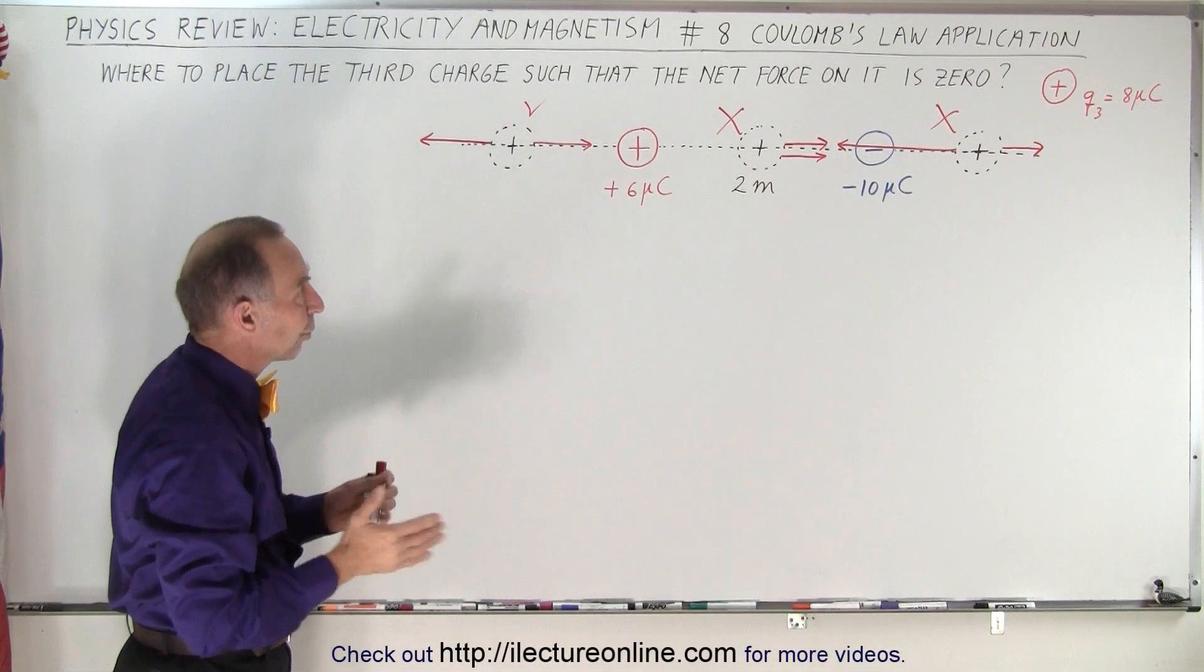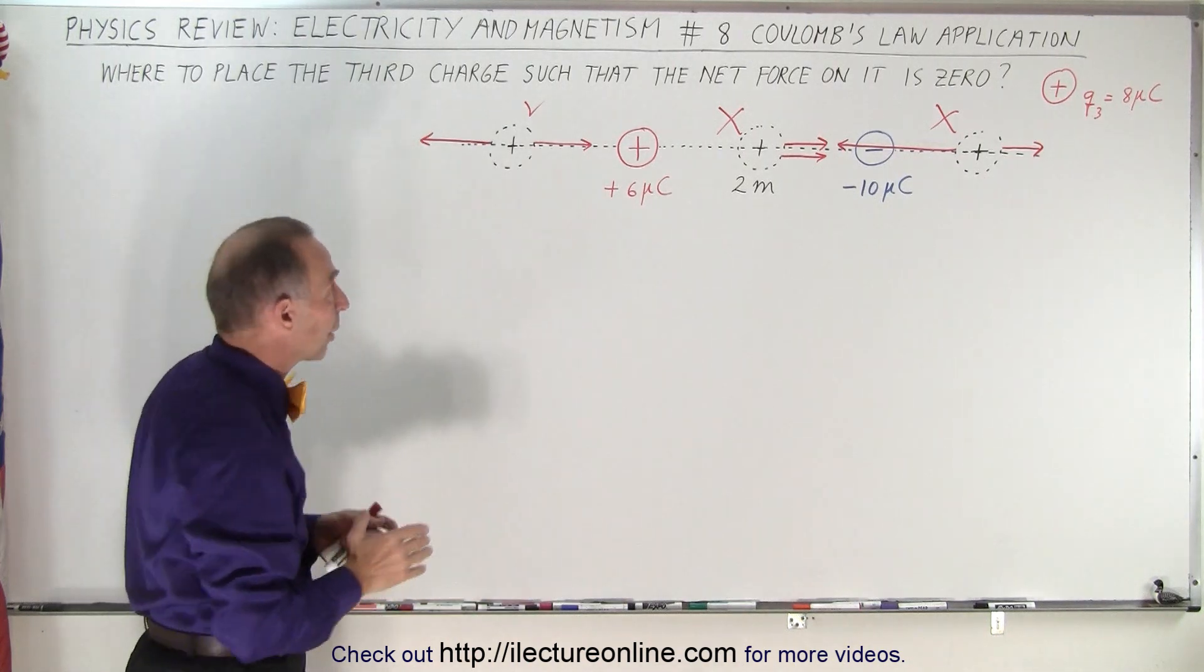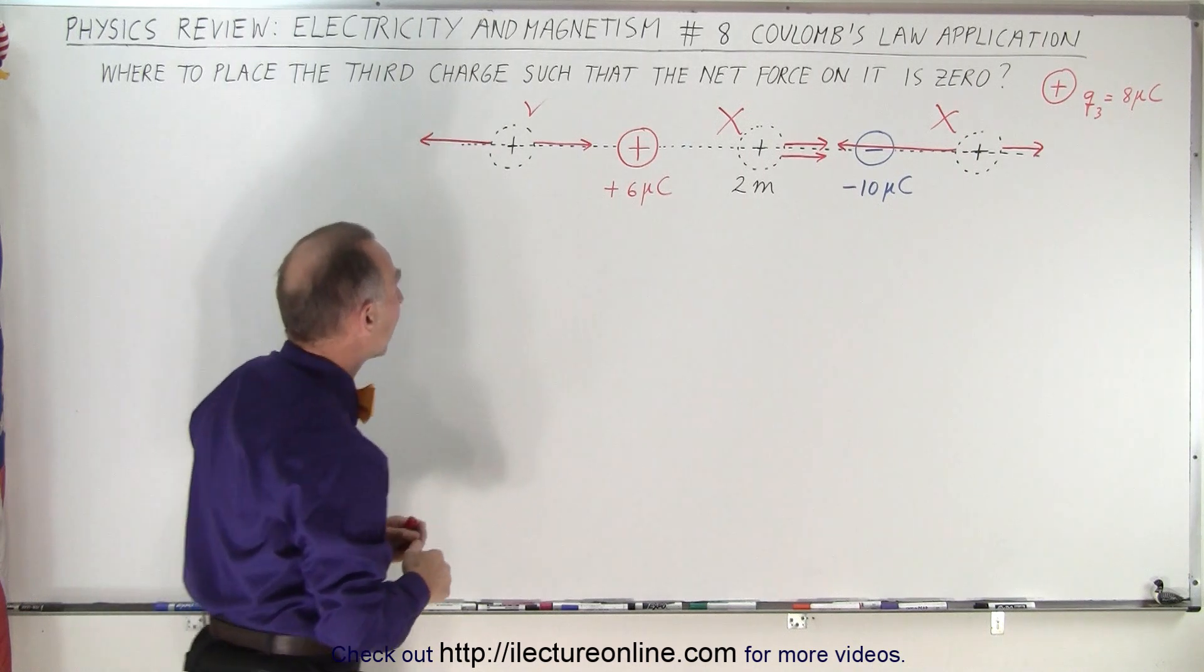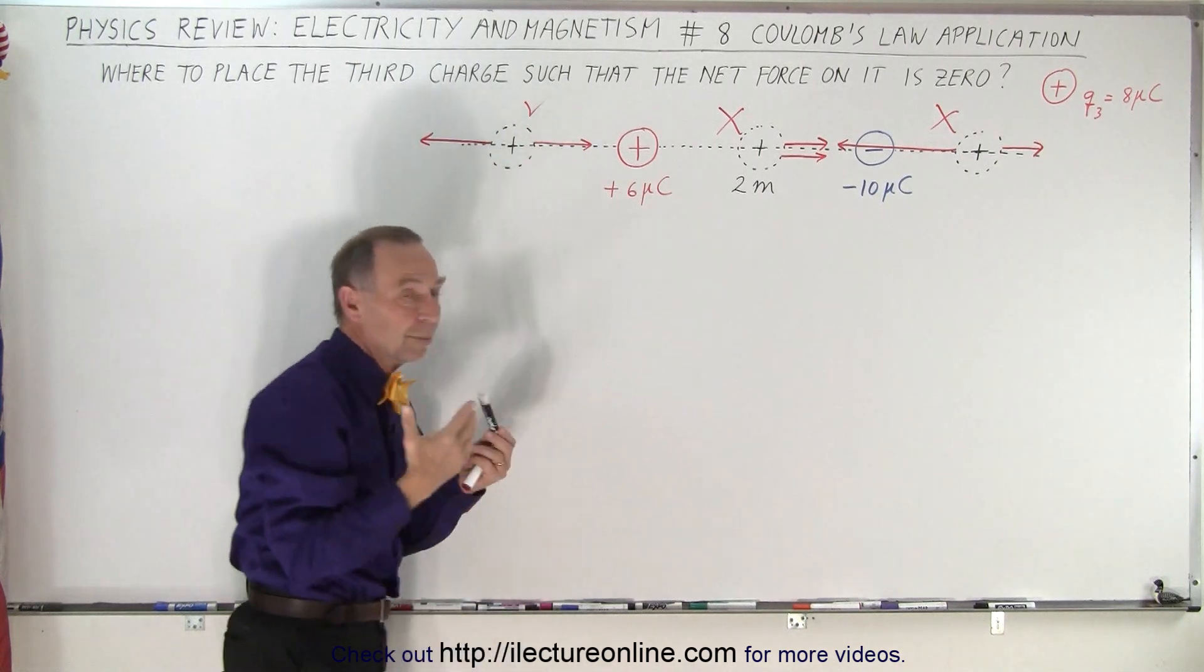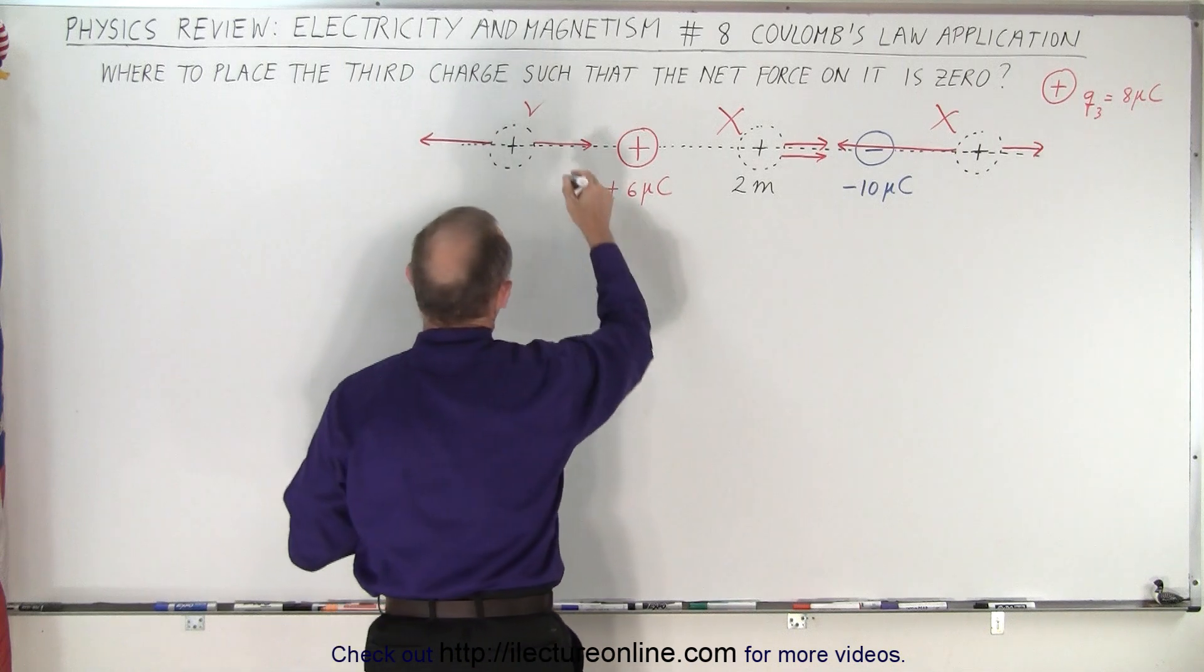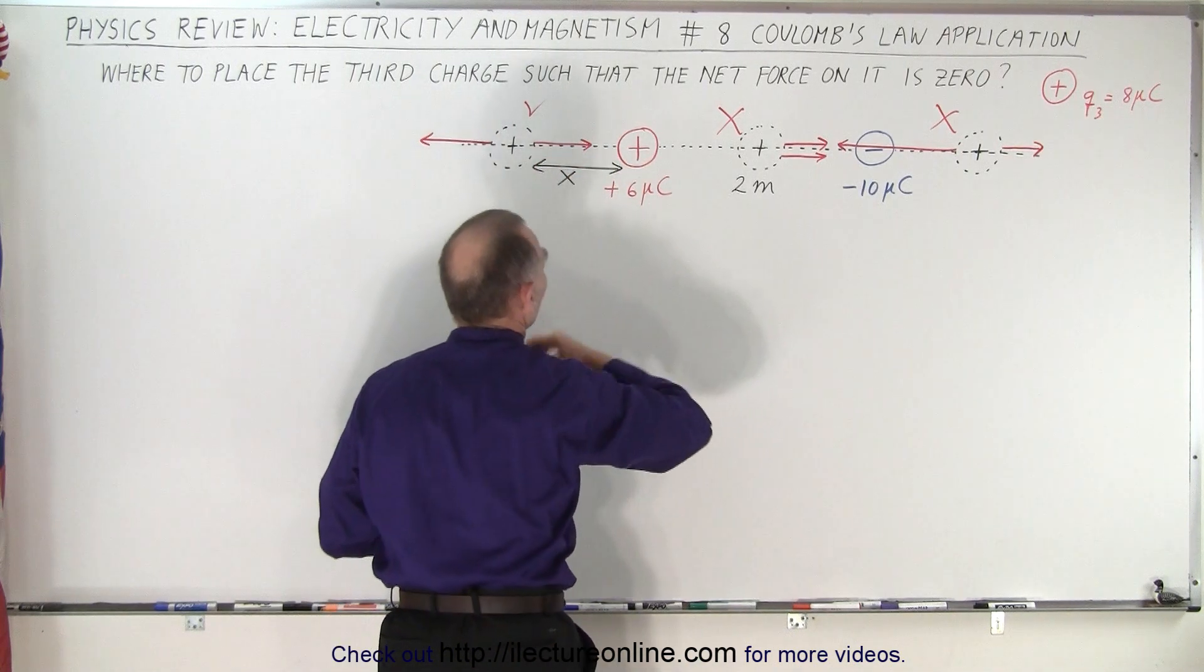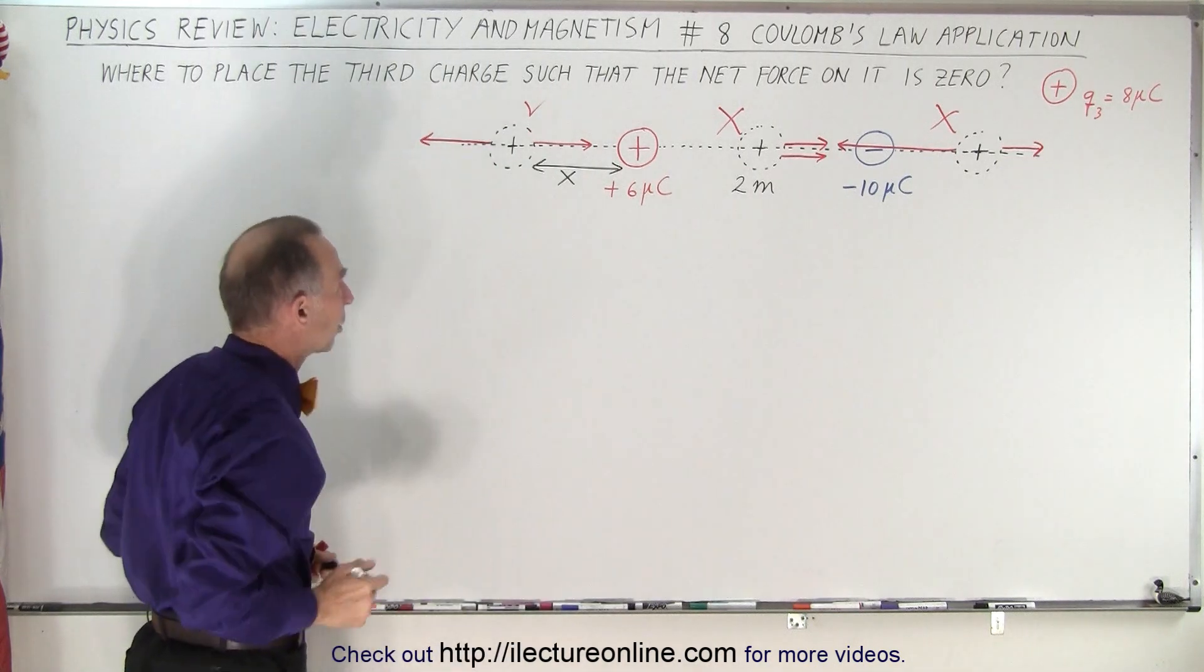So the next step is, once you determine where the charge should be in what region, now we need to find the location where the net force will be zero. You can see that we have two forces in opposite directions, so we simply want the magnitudes to be the same. And to do that, we need to imagine that the distance between here, these two, let's call it x because it's unknown. We're trying to figure out what the value of x is so that we find the correct location.